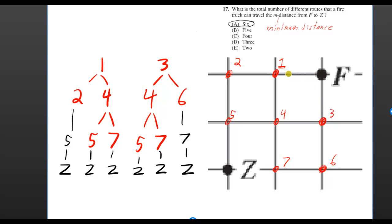If you go to point 1, you can't backtrack since we're doing the minimum distance, so then you would have to go to 2 or 4. You have to get closer to Z. Let's say you go to point 1 and then to point 2, well then you have to go to 5 and you have to go to Z. So that's one route that's possible with the minimum number of blocks.